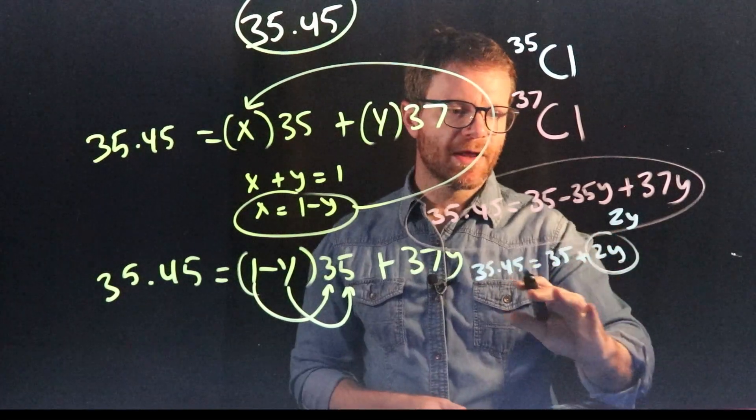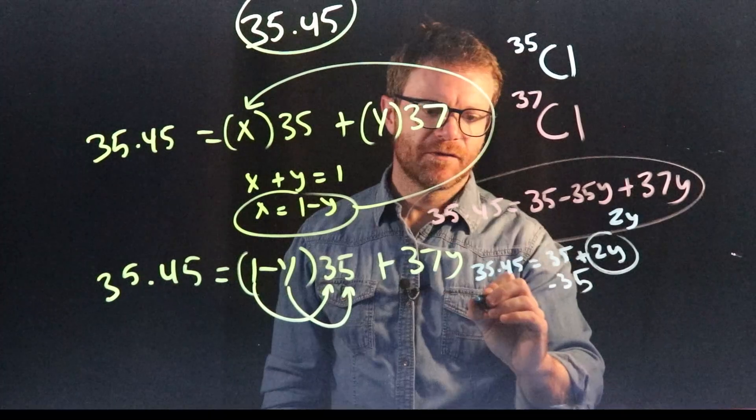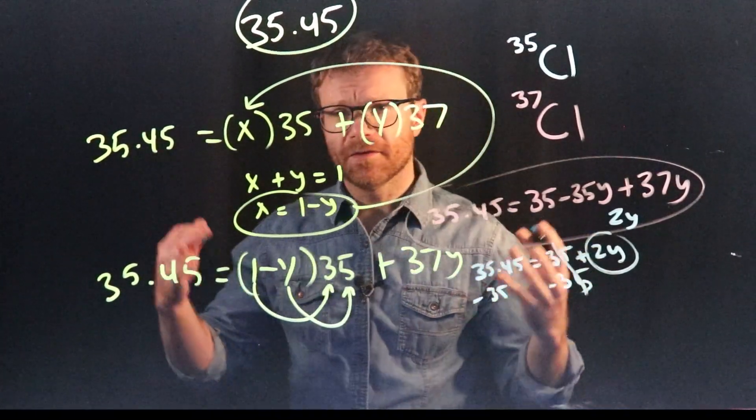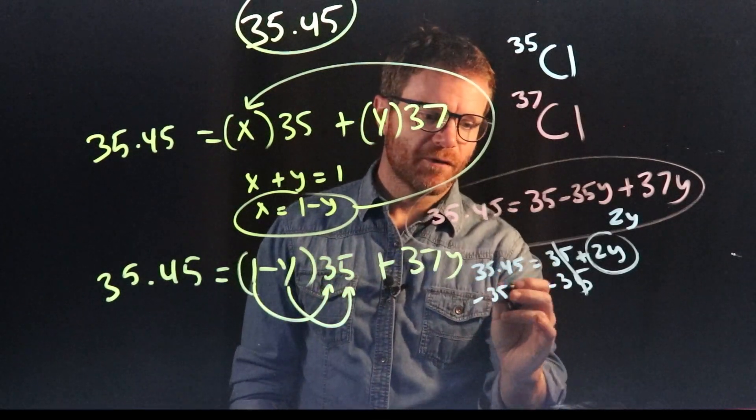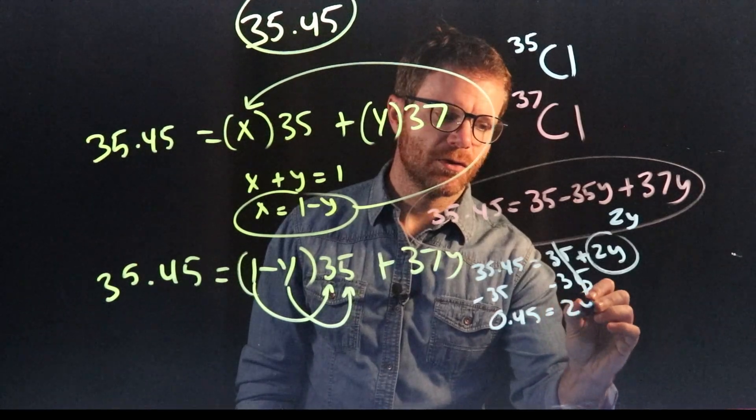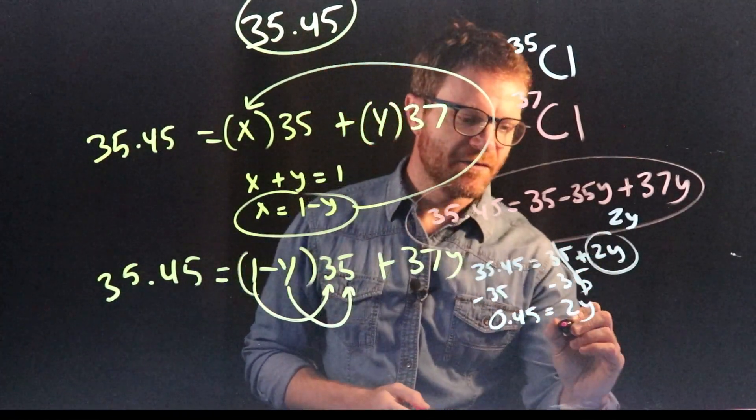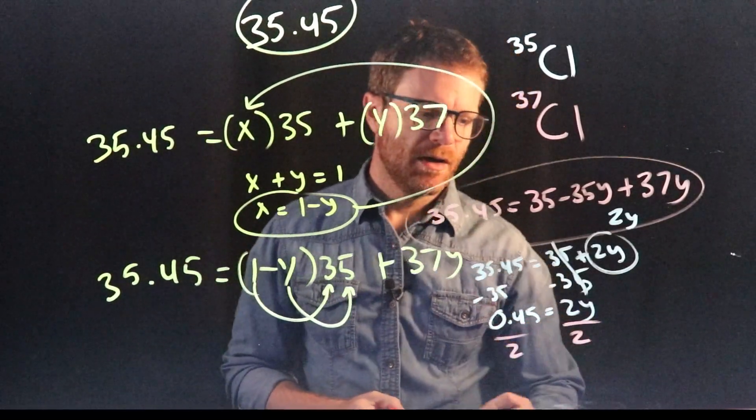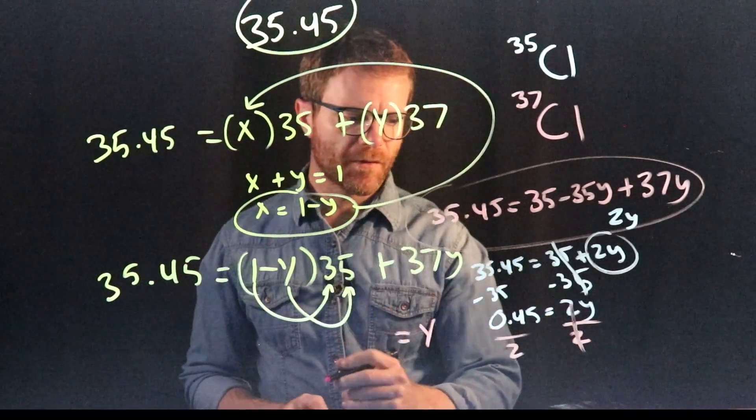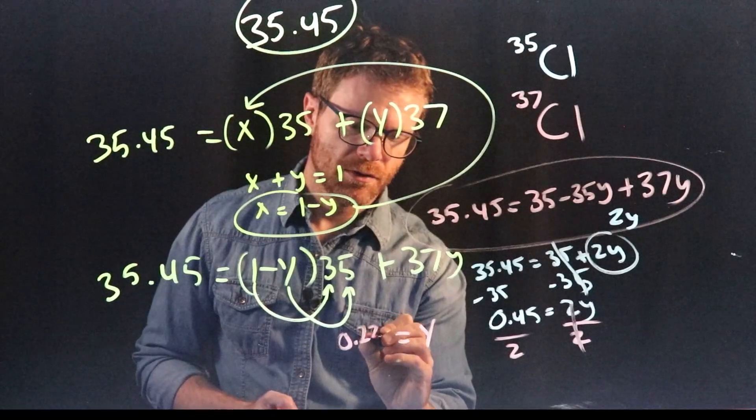Isolate the variable Y. We want to get it all by itself. So in order to do that, we're going to subtract 35 from both sides. This is going to cancel. 35 minus 35 is just 0. And 35.45 minus 35 is just 0.45 is equal to 2Y. If we know what 2Y is, we just got to figure out what Y is, divide both sides by 2, and we get Y equals 0.45 divided by 2, which is 0.225.